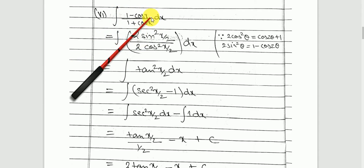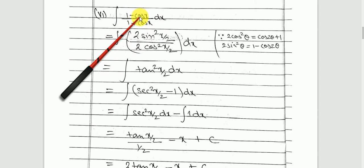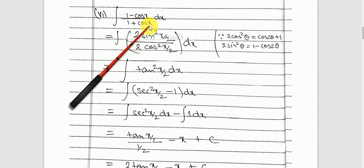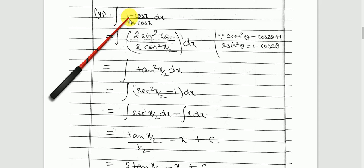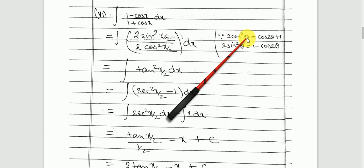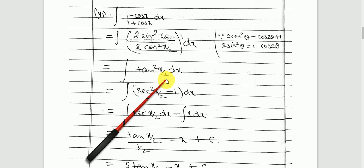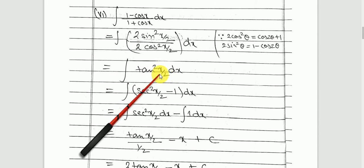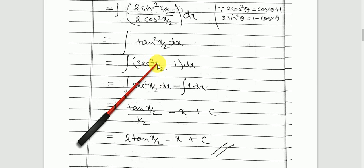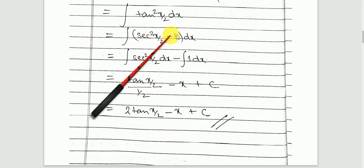Next, integration of 1 minus cos x upon 1 plus cos x. We don't have a direct formula, but the numerator 1 minus cos x can be written as 2 sin squared(x/2) and the denominator 1 plus cos x as 2 cos squared(x/2). The 2's cancel and you are left with tan squared(x/2). Since there's no direct formula for tan squared(x/2), write it as sec squared(x/2) minus 1. Separate the terms and integrate: the integration of sec squared(x/2) gives tan(x/2), but divide by the constant 1/2 to get 2 tan(x/2), minus x, plus c.